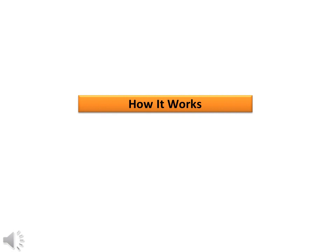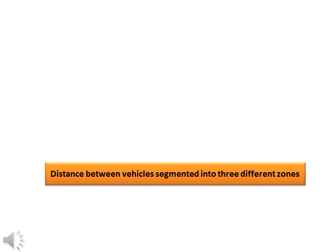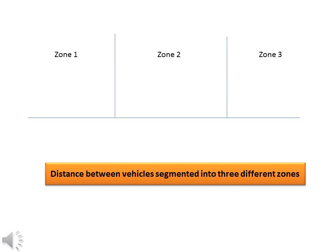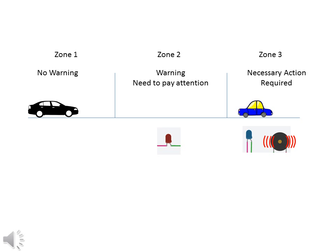Let me explain how the system works. The distance between vehicles is segmented into 3 different zones: Zone 1, Zone 2, and Zone 3. Zone 1 is no warning. Zone 2 is where the driver needs to pay attention and there will be a visual lighting warning. Zone 3 is where the driver has to take necessary action with a lighting warning followed by a rapid audio buzzer.